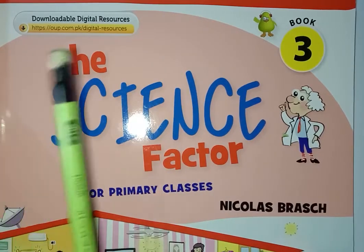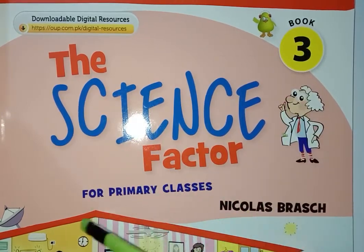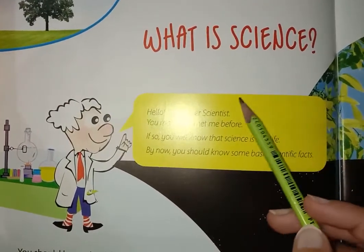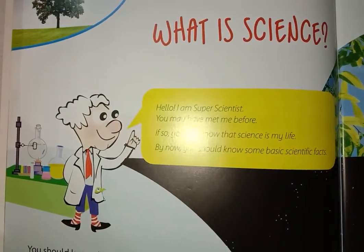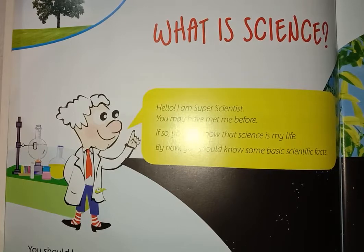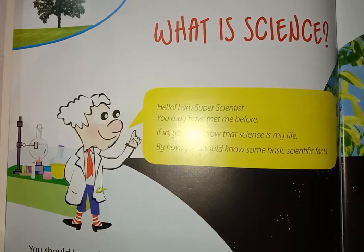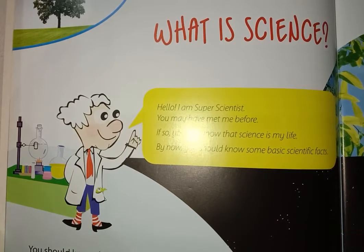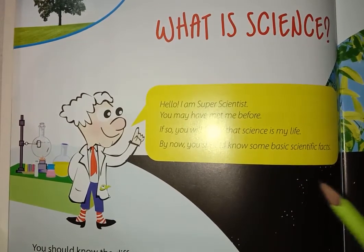Today we can start our science lecture. Book three means a class of three — the science factor for primary classes. This is our first lecture about science. What is science? The things around us is science. Everything around us is science. Just because of science we can use our cell phones, take pictures, make videos, watch TV, and many other things. The food which we cook in our home is also a science — we can call it home science.